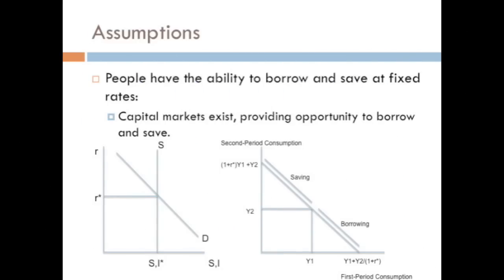Our first assumption is that capital markets exist. And here we have two graphs. On the left is a market for loanable funds where the supply and demand of loanable funds intersects to give us an equilibrium interest rate. And this model is kind of the basis for the inter-temporal budget constraint that we can see on the right.